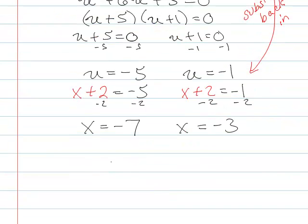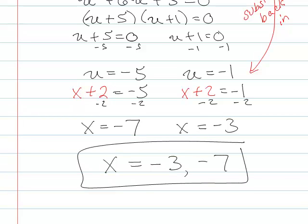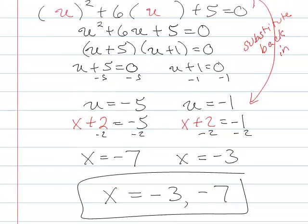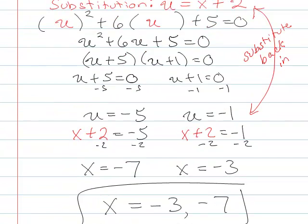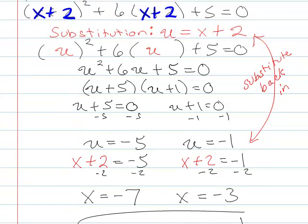So my solution here is actually x equals negative 3 or negative 7. Okay, so I've got 2 options. So see we take a problem that we didn't know how to solve, and we turned it into something that theoretically we did know how to solve. So that's what makes substitution pretty special.